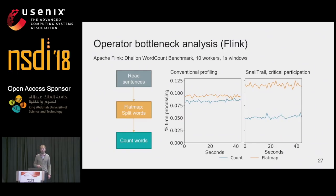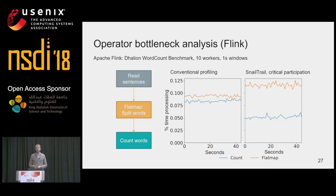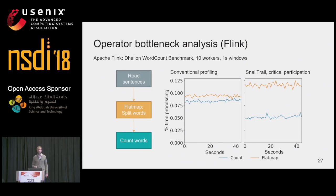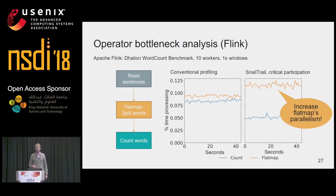The second analysis is the operator bottleneck analysis. Here we used Apache Flink executing a simple word count topology with three operators: the first reads sentences, the second is a flat map that splits sentences into words, and the last counts those words. We deliberately under-provisioned the flat map operator to create an artificial bottleneck. Conventional profiling shows the time spent in processing for both operators is about the same, so it does not indicate a latency bottleneck. On the other hand, SnailTrail's critical participation clearly indicates that the flat map operator has a higher critical participation than the count operator, because it is on more critical paths.